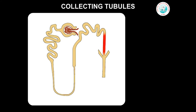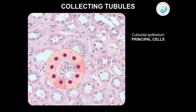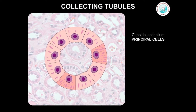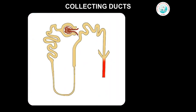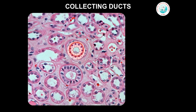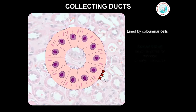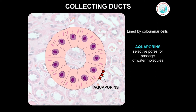After the DCT comes the collecting tubules. Urine passes from the distal convoluted tubule to the collecting tubules — also called the ducts of Bellini — the last part of each nephron. These collecting tubules join each other to form larger collecting ducts that empty into the minor calyces. The collecting tubules are lined by cuboidal epithelium called principal cells. Scattered among the principal cells are darker staining intercalated cells that have more abundant mitochondria, which help regulate the acid-base balance by secreting hydrogen ions and absorbing bicarbonate ions. Collecting ducts are a major component of the urine concentrating mechanism. They are lined by columnar cells rich in aquaporins, which act as selective pores for passage of water molecules.